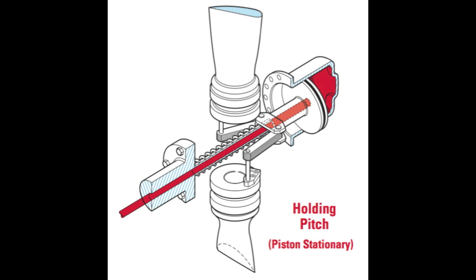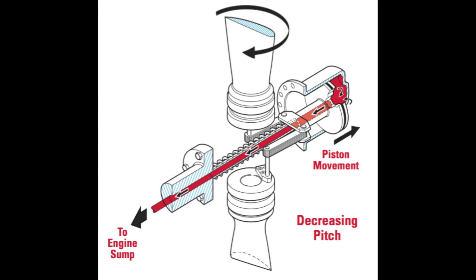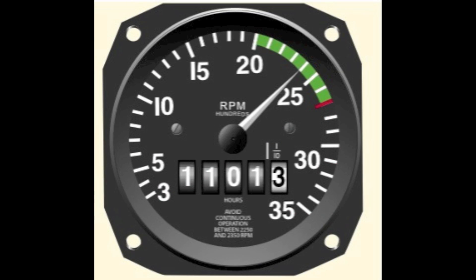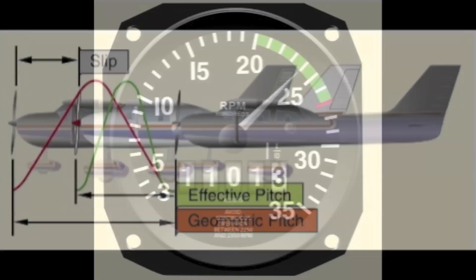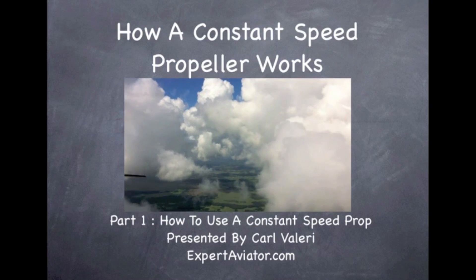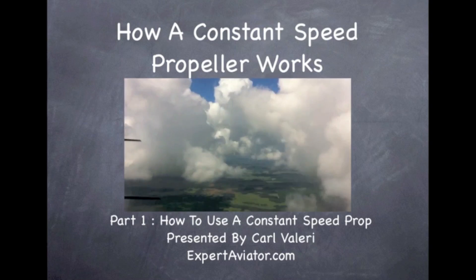The propeller in flight is constantly changing pitch to keep the selected RPM setting we choose for our conditions of flight. For instance, we would want a low pitch setting so that the engine can produce the highest RPM during takeoff and go-around, but in cruise flight we would want to set the propeller pitch higher, therefore reducing the RPM, thus reducing the fuel burn and decreasing the amount of slippage. For a description of slippage, you can view part one of this series or go to the website.